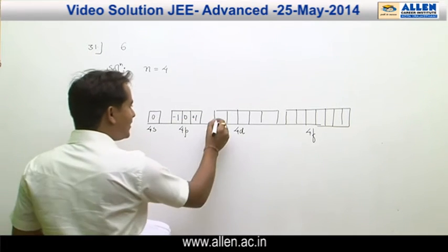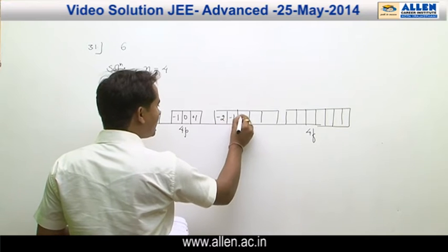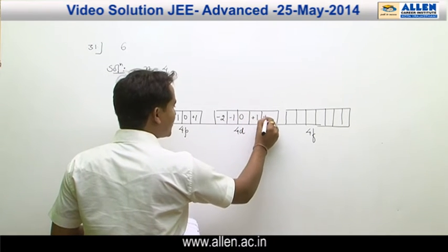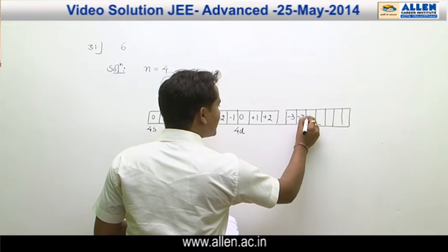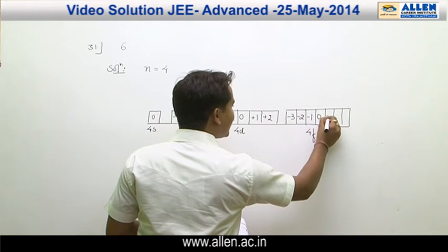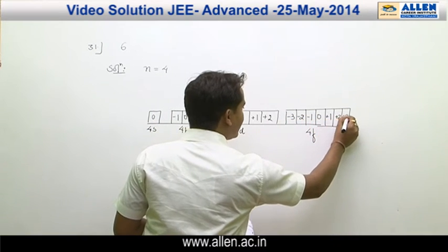In case of d: minus 2, minus 1, 0, plus 1, plus 2. In case of f: minus 3, minus 2, minus 1, 0, plus 1, plus 2, and plus 3.